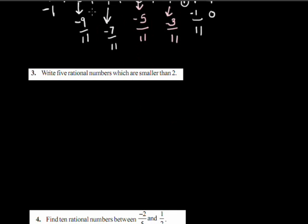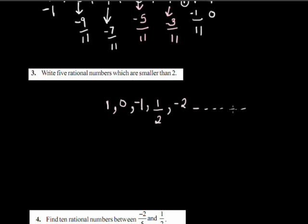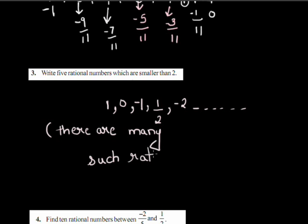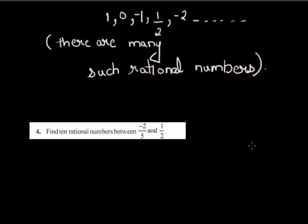The next question: I have to write 5 rational numbers which are smaller than 2. There can be many such rational numbers. For example: 1, 0, -1, 1/2, -2, and so on. There are many rational numbers smaller than 2.